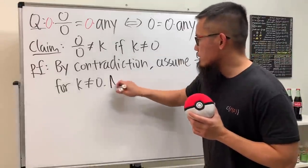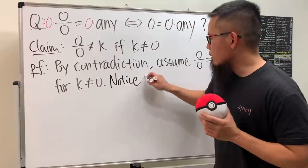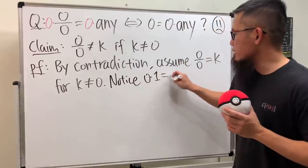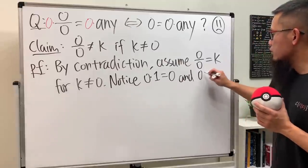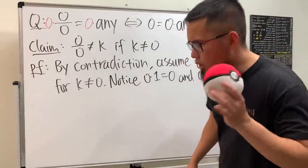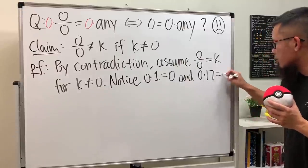Check this out. Notice we know of course zero times one is equal to zero. And we also can say zero times, what's your favorite number, 17? This right here is equal to zero.